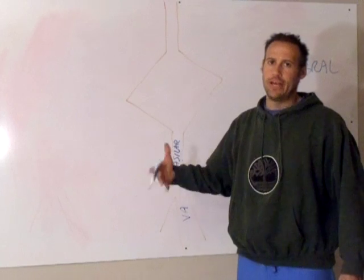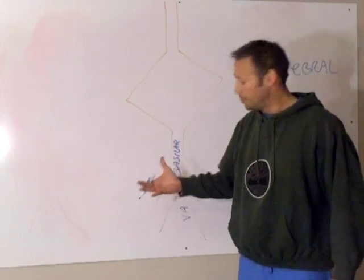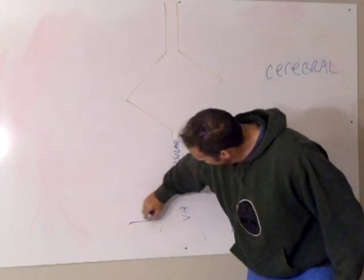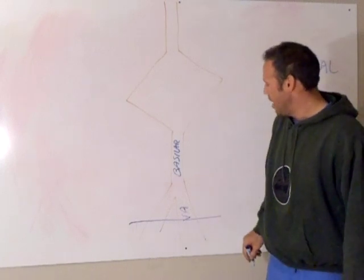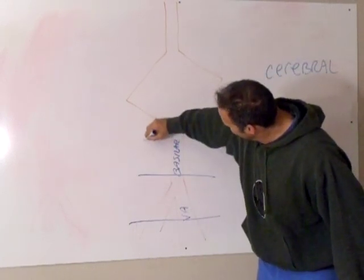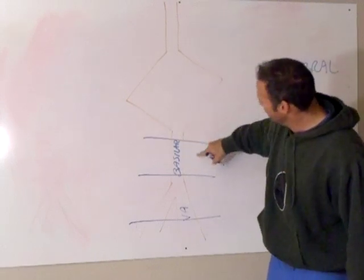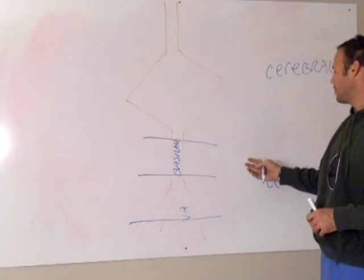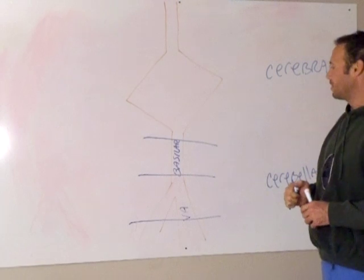Now everything anatomically has some variance, but typically off the vertebral artery you have one branch, your second branch is there, and the third branch is there. So you have three branches in the cerebellar region.